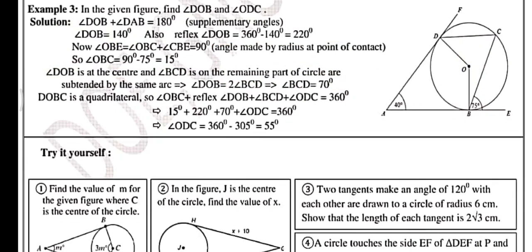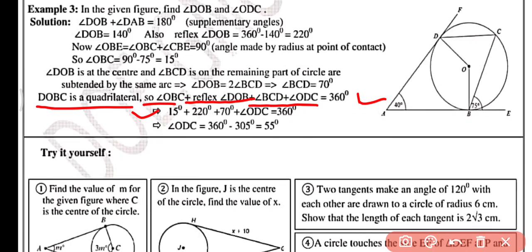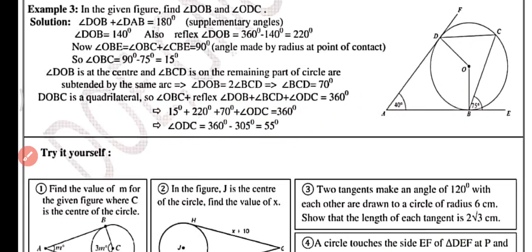DOBC is a quadrilateral, so angle OBC + reflex angle DOB + angle BCD + angle ODC = 360 degrees. Substituting: 15 + 220 + 70 + angle ODC = 360 degrees, so angle ODC = 360 minus 305 = 55 degrees.